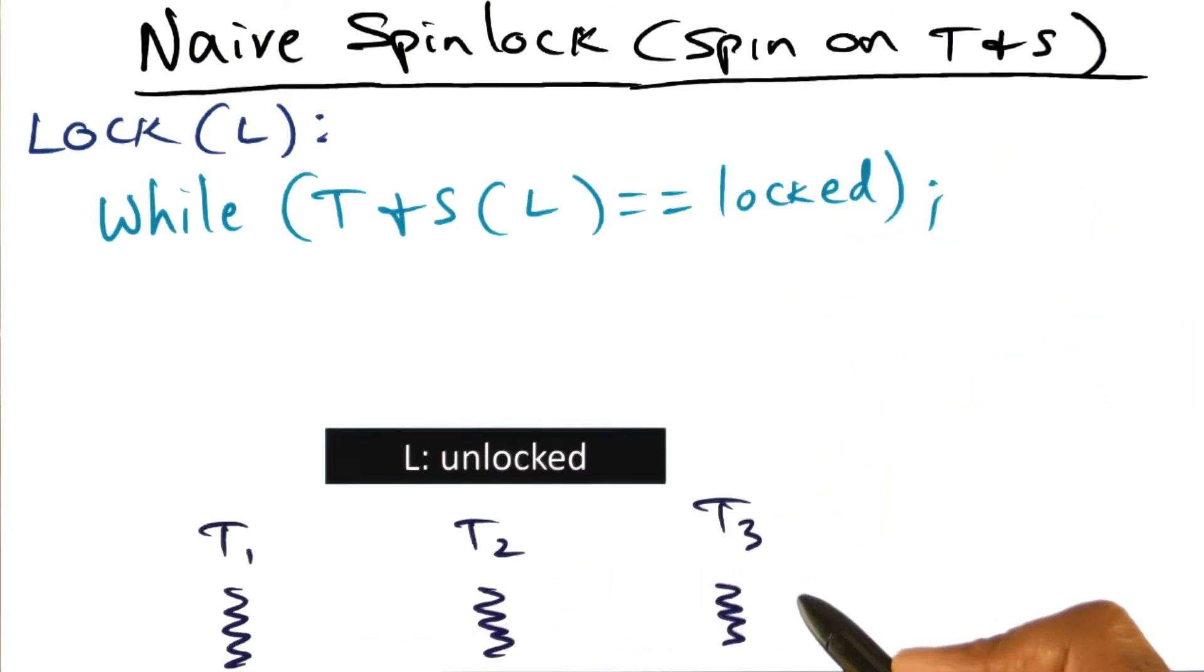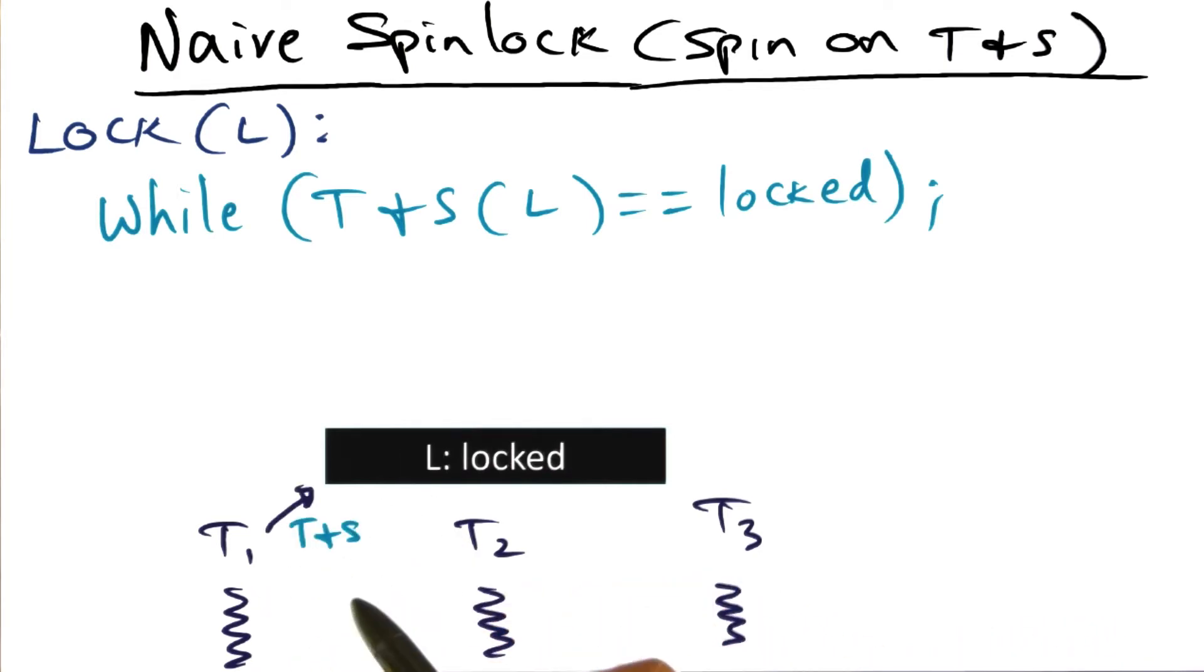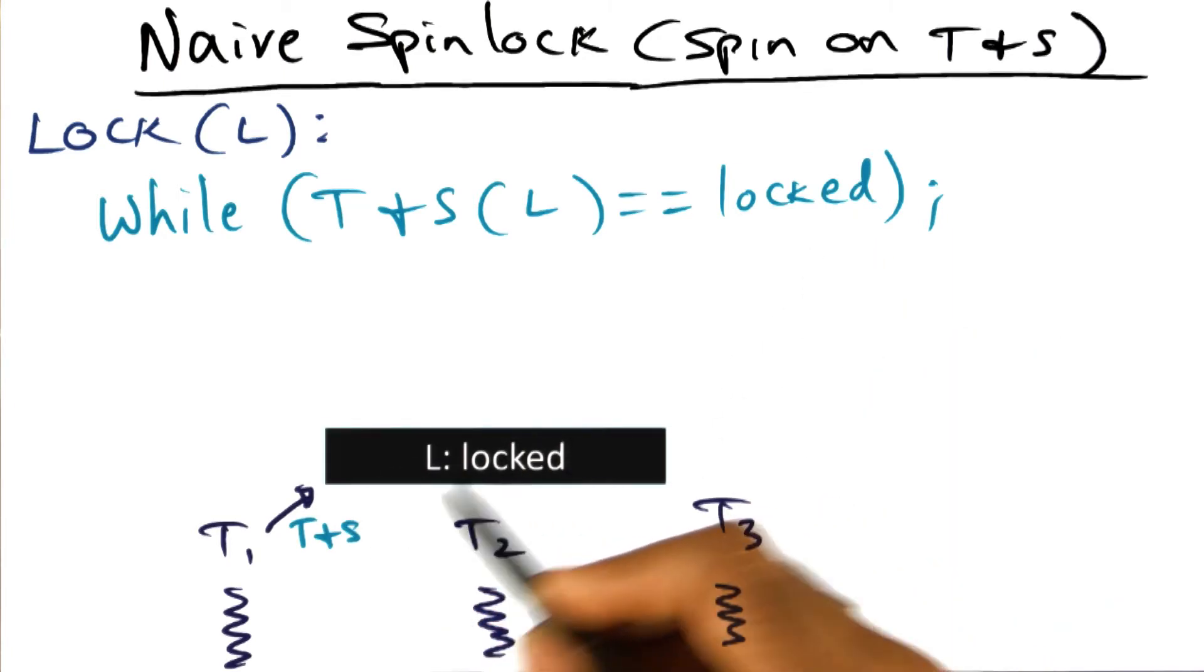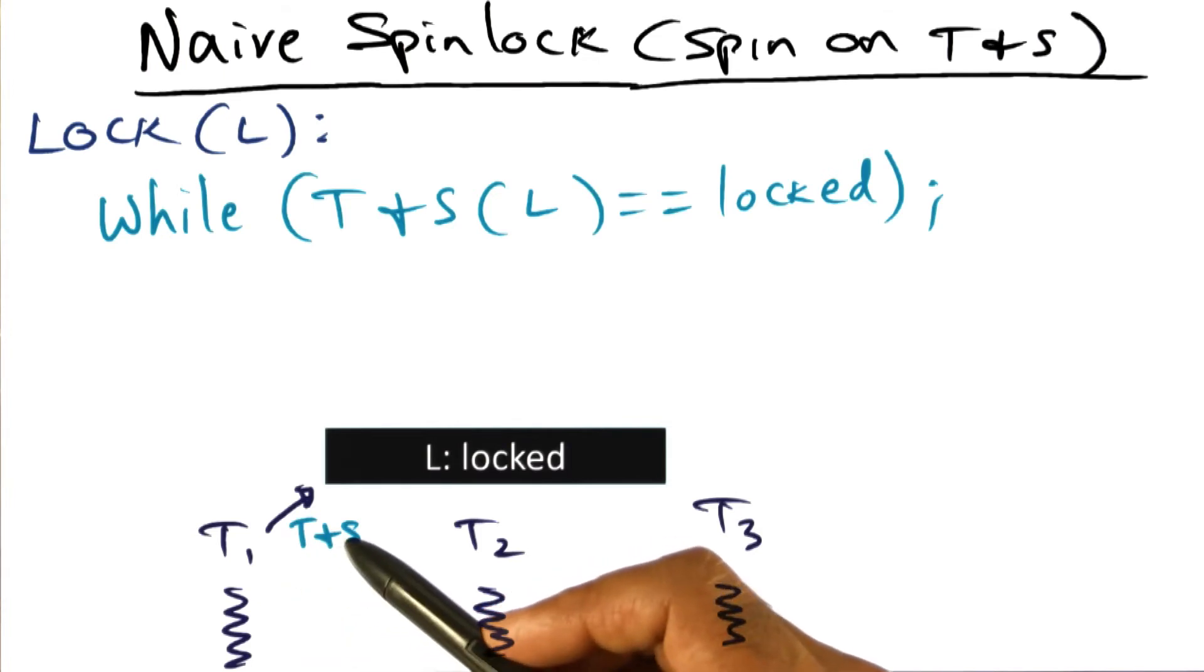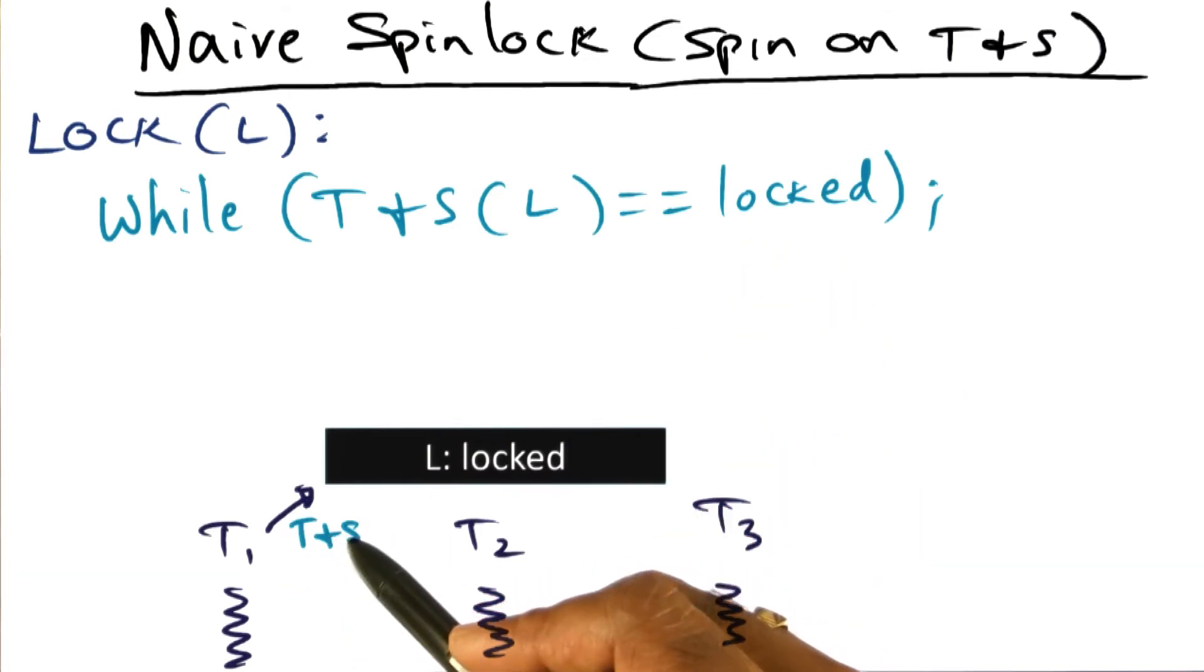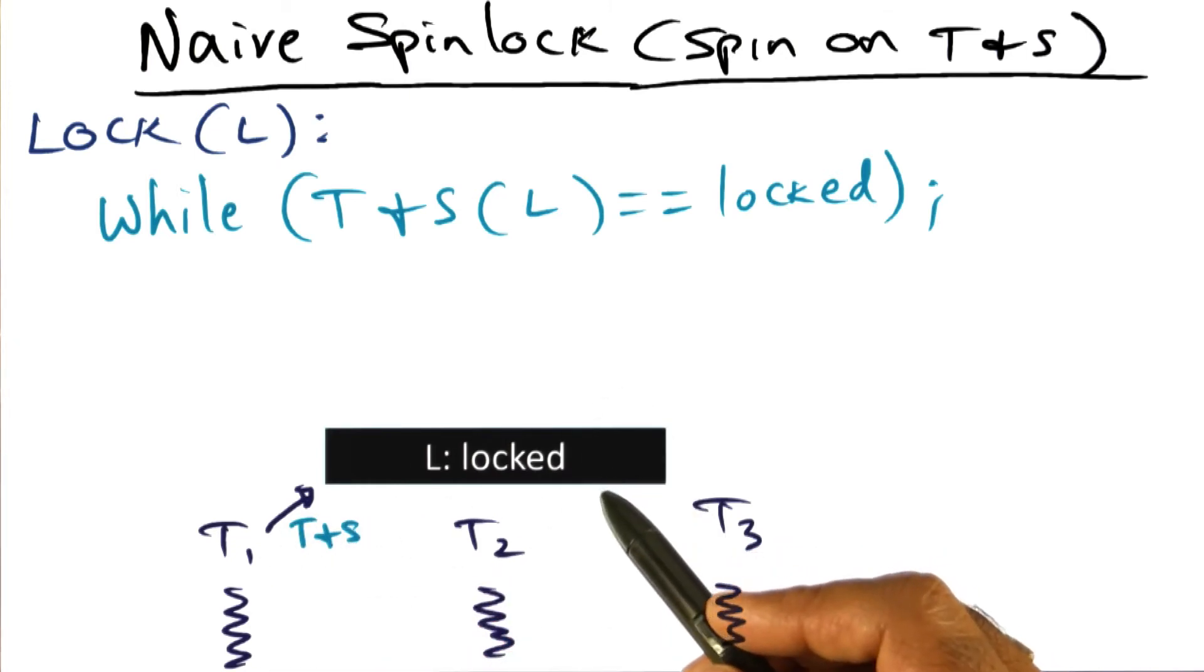So let's put up some threads here that are trying to get this lock. Let's say that T1 is the first one to make a test and set call on this lock, and it finds it unlocked, and therefore it locks it. Once it locks it, T1 knows that it's got the lock. So it's got the lock, it can go off to messing with the data structure that it wants to mess with. That is good, so far as T1 is concerned.